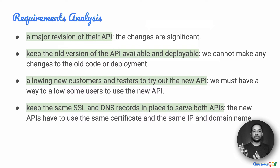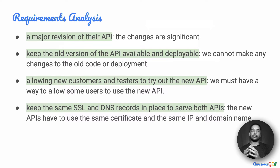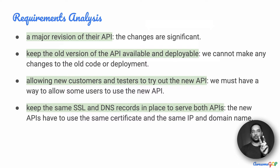We need to allow new customers and testers to try out the new API, so we have to have a way to allow certain customers and the testing team access to the new API as well. We need to keep the same SSL and DNS records in place — the new API has to use the same certificate and the same IP and domain name. Both API versions have to be served at the exact same point.